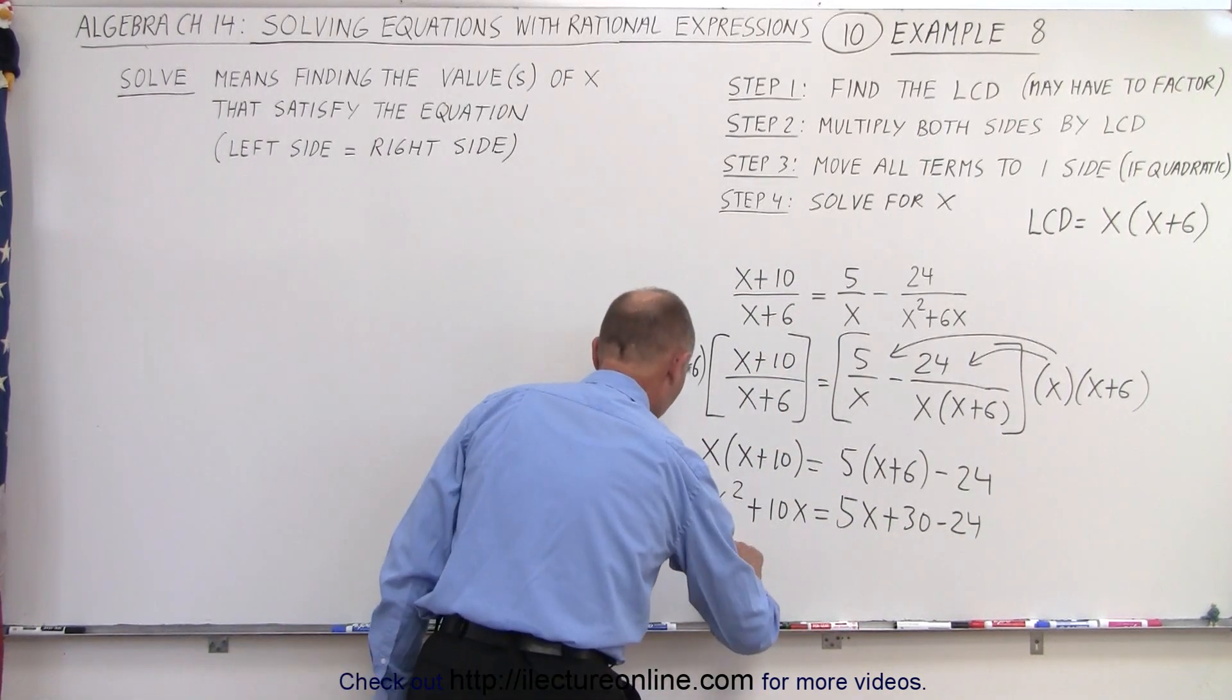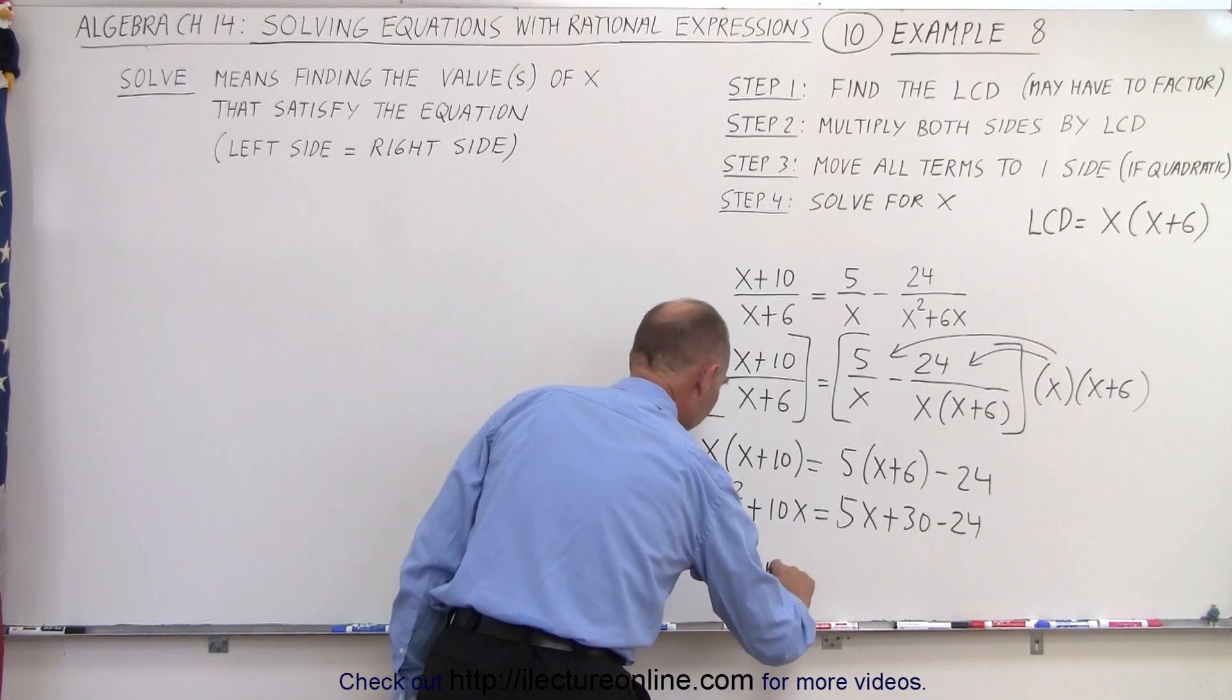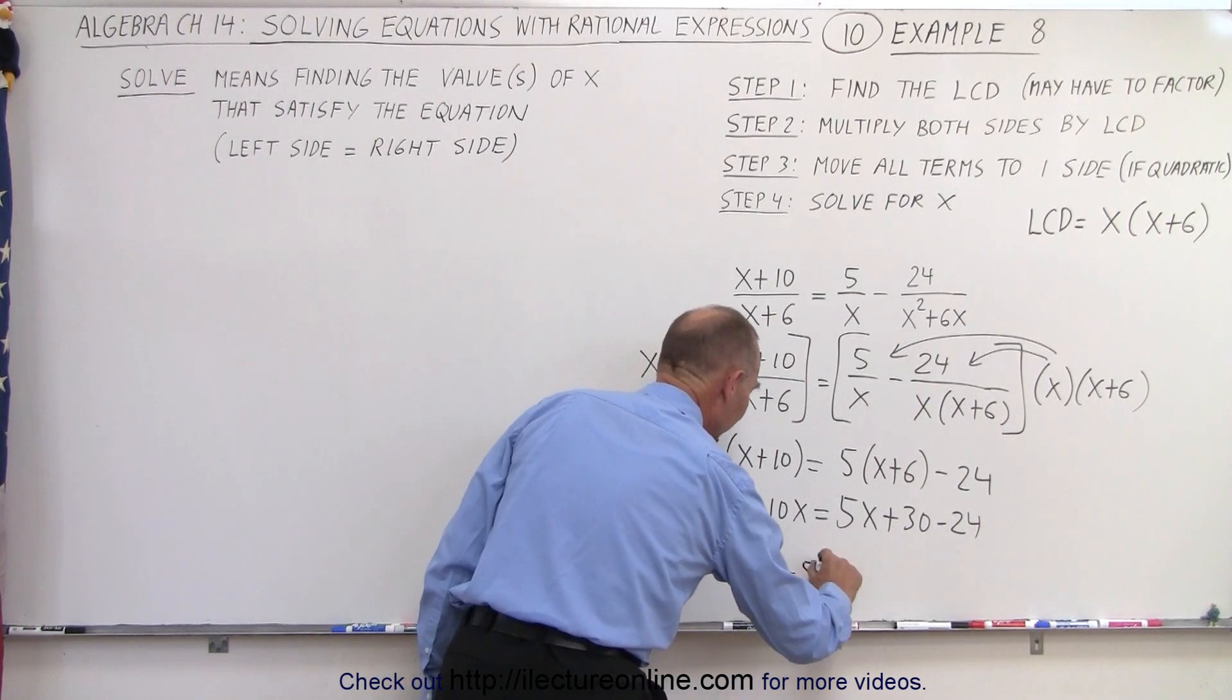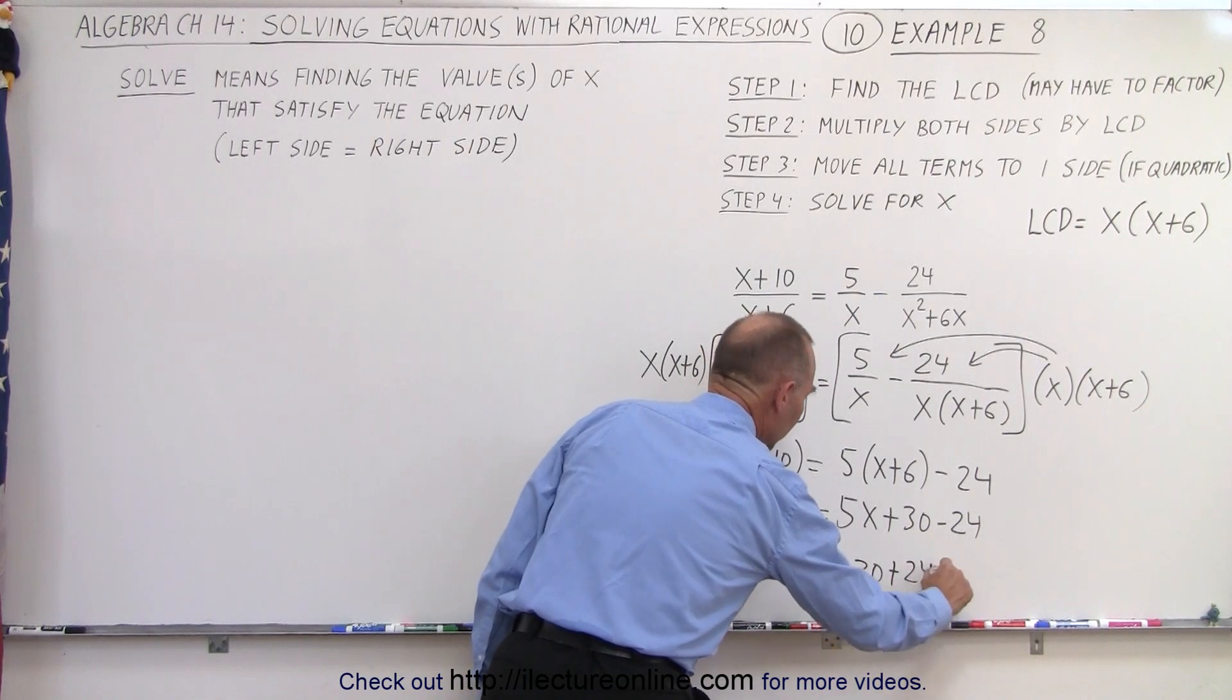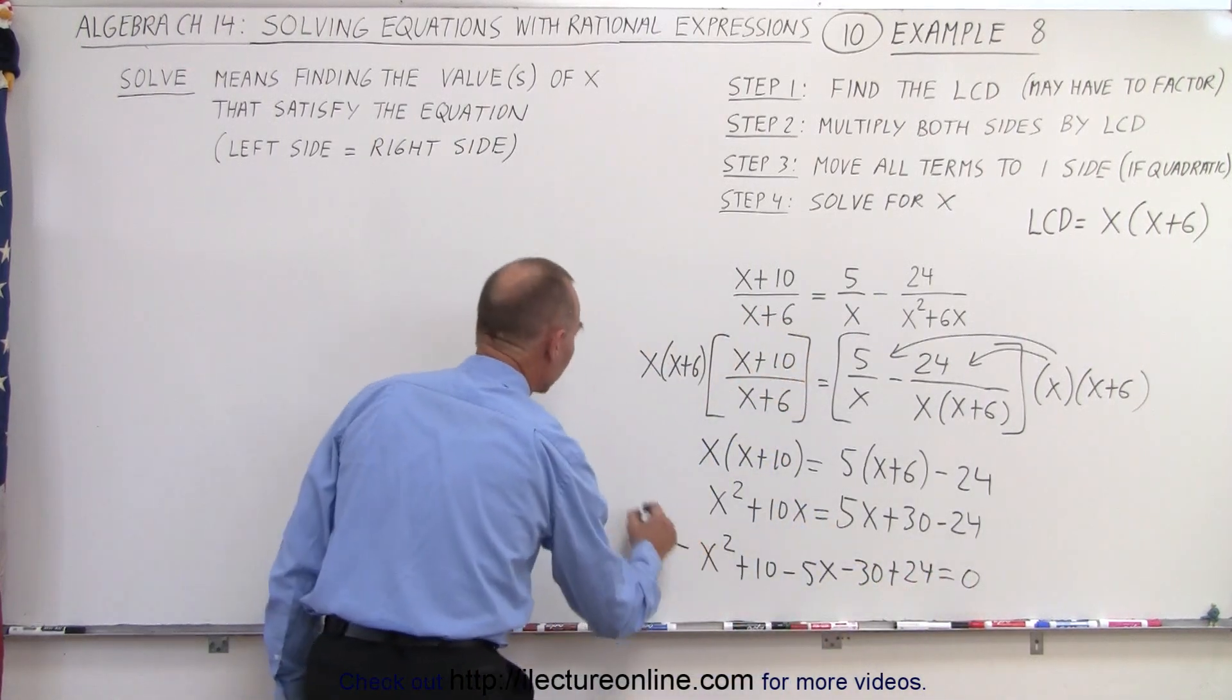So we have x² + 10x - 5x - 30 + 24 = 0. And let's continue over here.